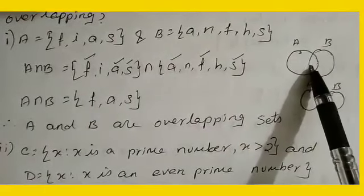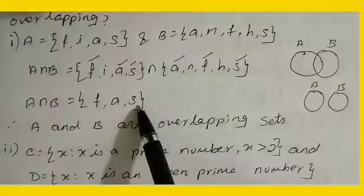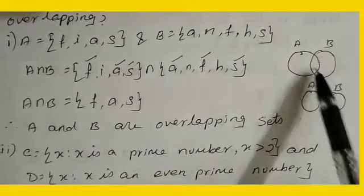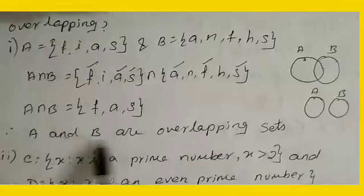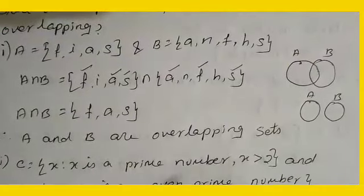This is the symbol for overlapping. Here three common elements are there, so this is overlapping. It is not disjoint. Therefore, A and B are overlapping sets.